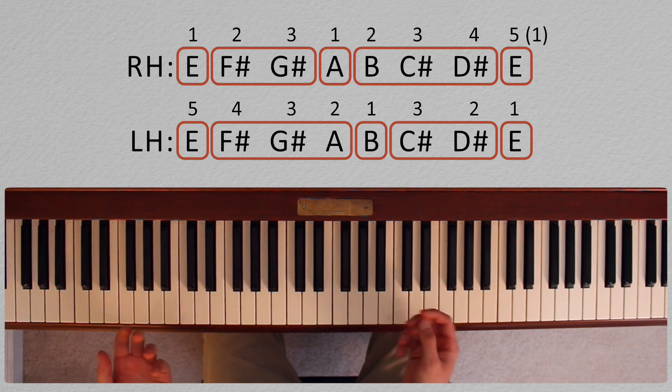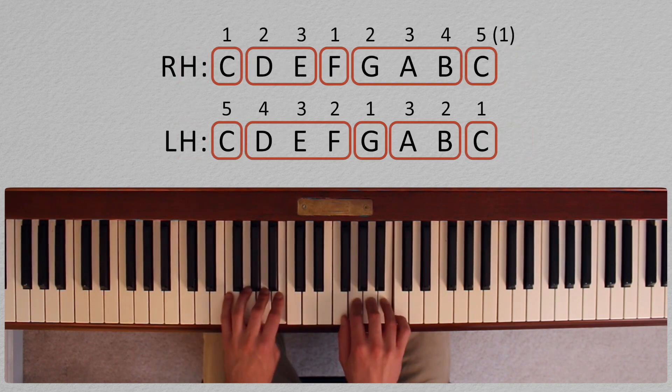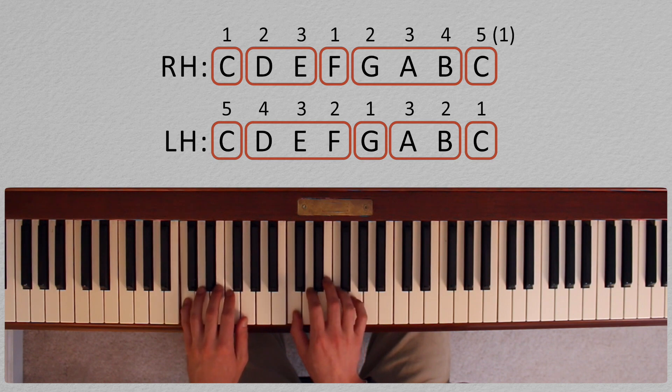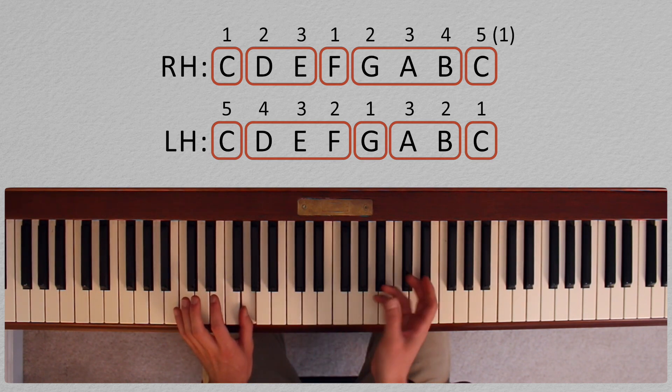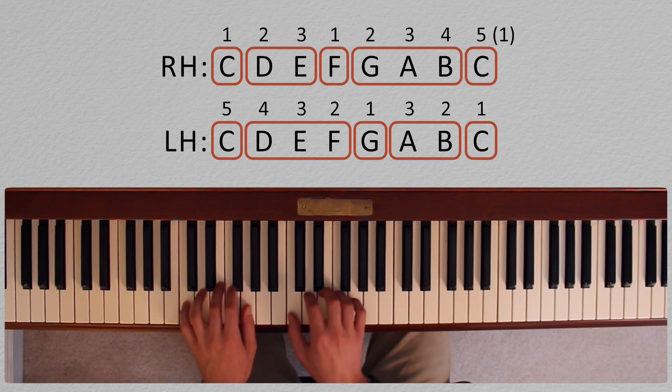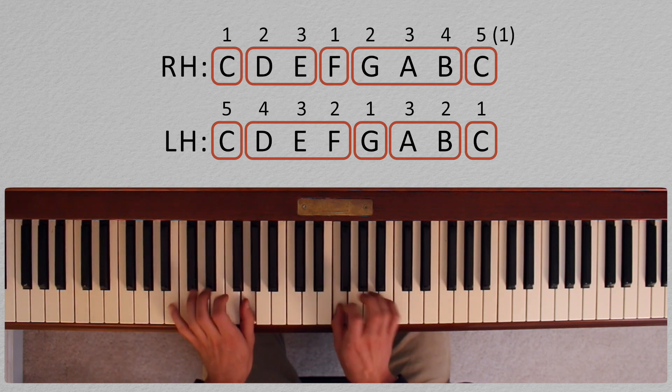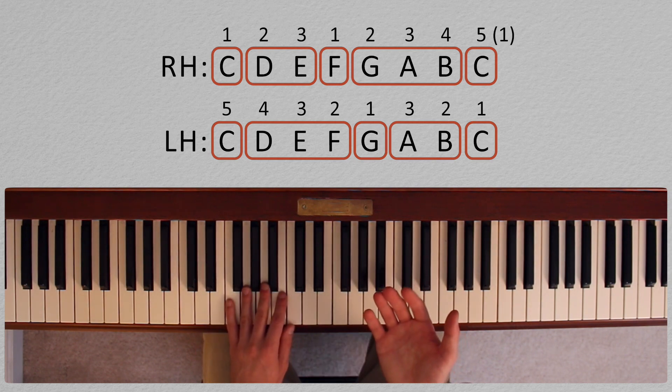And this can go for any scale that you do. Say we do C major. The thumb is where we're going to pivot for C as well. So play up until that pivot note. In this case, you're going to pivot in the left hand on the 5 and the 4 in the right hand. It's going to clash a little bit, but that's okay. Then play the rest up until the next tonic.